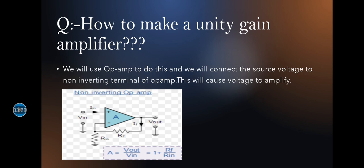By applying KCL and Ohm's law at the node connecting Rn and Rf, we get that Vout equals Vin times 1 plus Rf by Rn.